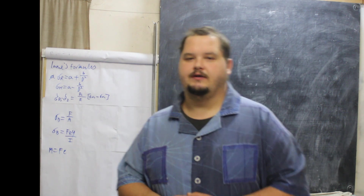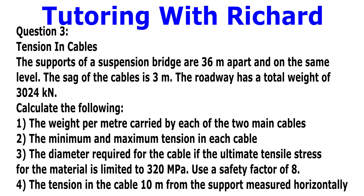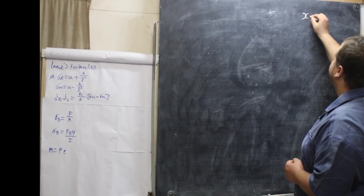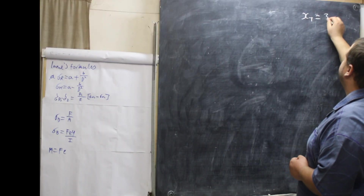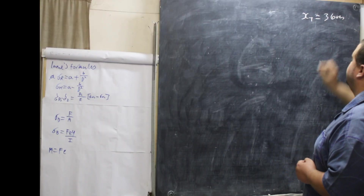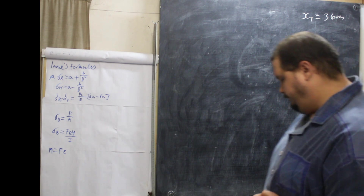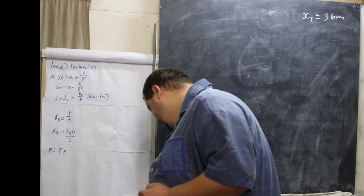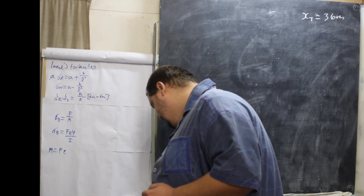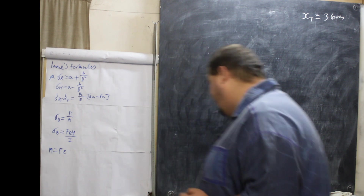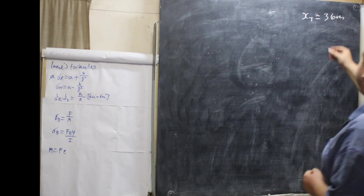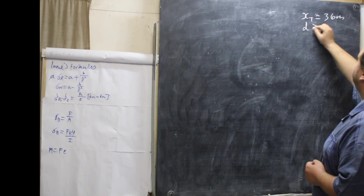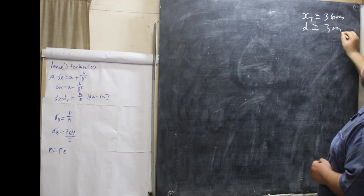Let's get straight into it. Our question states: the supports of a suspension bridge are 36 meters apart, so X total is 36 meters. The supports are at the same level. The sag of the cable is 3 meters.